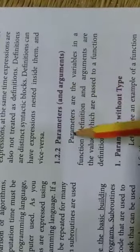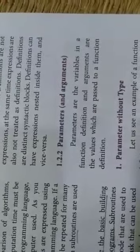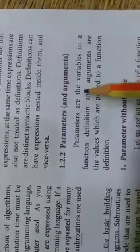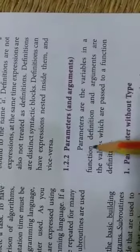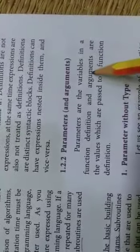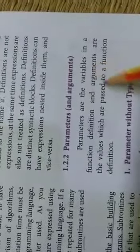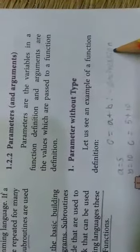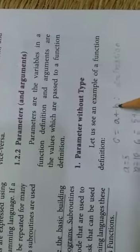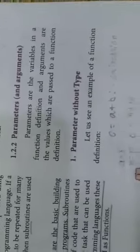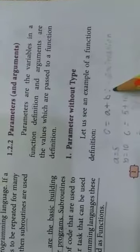Both parameter and argument are related words used in function. There is a small difference between the two: parameters are the variables in the function definition. But the arguments are the values passed to those variables in the function definition. For example, c equal to a plus b is a complete expression. Here a and b are operands, the plus is the operator, and c is the result. a equal to 5, b equal to 10 — the values passed are called arguments.